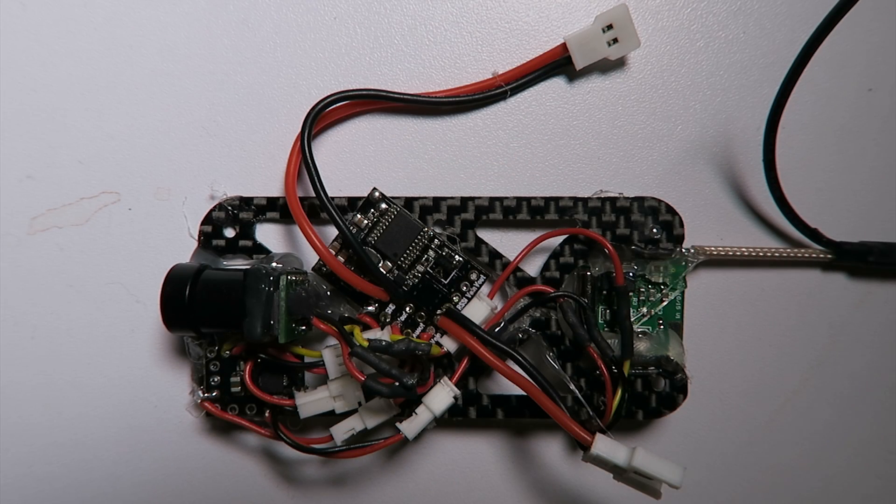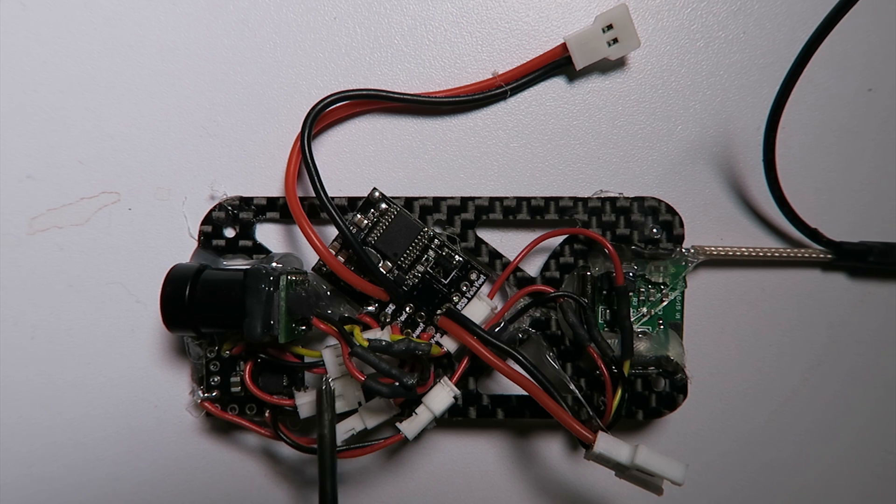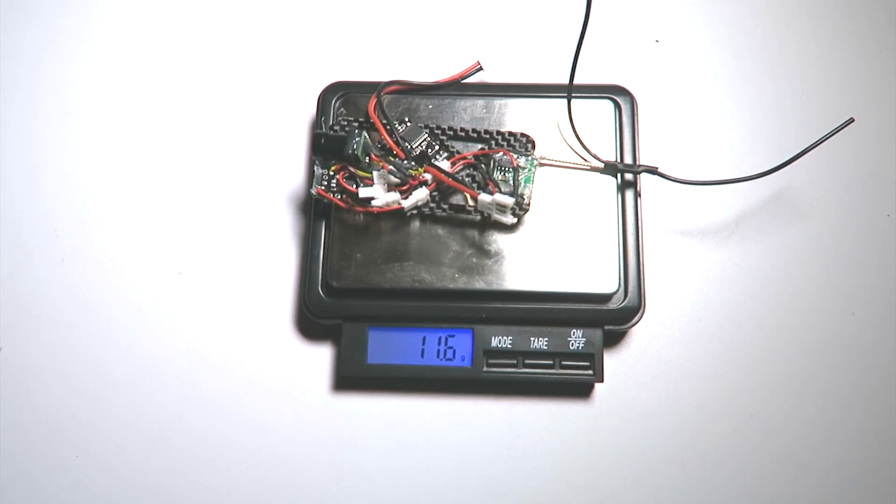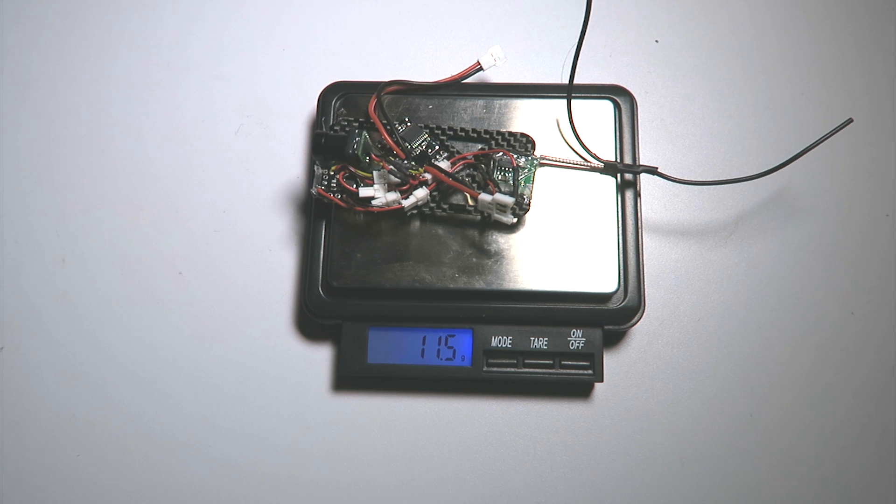Apologies for the mess of JST connectors, but I'm going to be using this FPV plate as a test rig to swap different components around. I also want the option to bypass the OSD for particular tests, so the connectors allow me to do that as well. The entire FPV plate weighs 11 grams, which is not bad at all. I would say I could get it down to about 9 grams without the extra JST connectors.